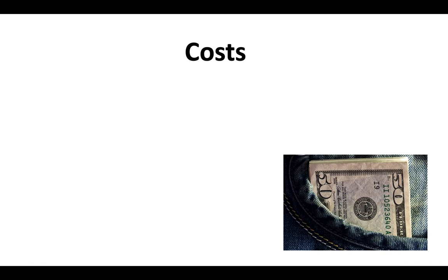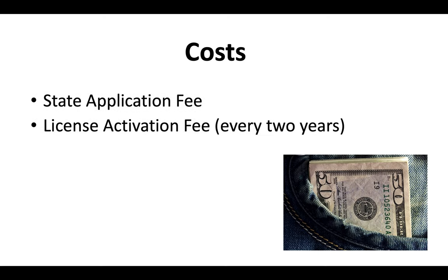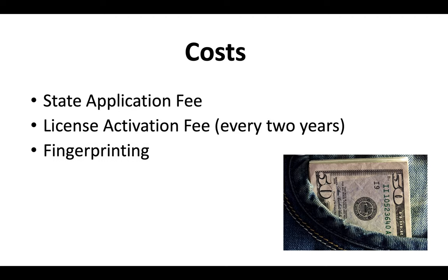The costs for a California General Engineering Contractor license include a state application fee, a license activation fee, and a renewal fee every two years. You'll also pay for the cost of fingerprinting and provide a contractor bond number. For the most up-to-date California contractor license fees, there's a video that'll appear at the end of this one — I suggest you watch that for the most current costs.